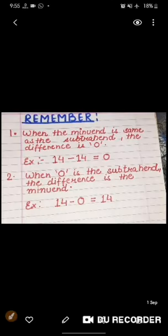Second, when zero is the subtrahend, the difference is the minuend. Example, 14 minus 0 gives 14, where 14 is the minuend.